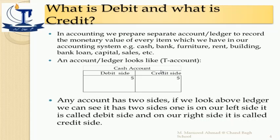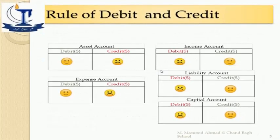If we look at the ledger, we can see it has two sides: on the left side it is called the debit side, and on the right side it is called the credit side. The words debit and credit came from two Latin terms — a debt term and a credit term. We don't need to go into that detail; we just have to understand that in a ledger there are only two sides — debit and credit. We will discuss balancing accounts in the next slides.